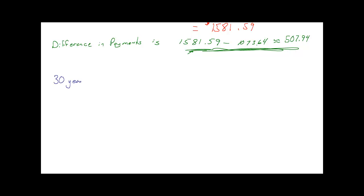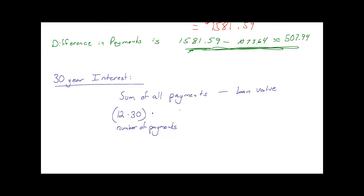Let's look at the 30-year interest compared to the 15-year interest. To get the amount of interest you actually paid, we look at the sum of all the payments and subtract the loan value, which was $200,000. That difference is all the extra money paid on interest. For a 30-year, 12 months times 30 years is the number of payments, and each was $1,073.64.